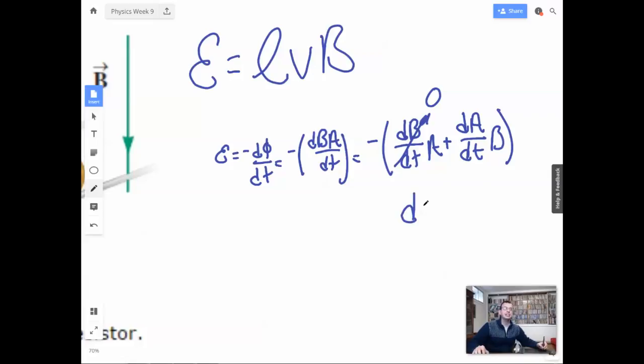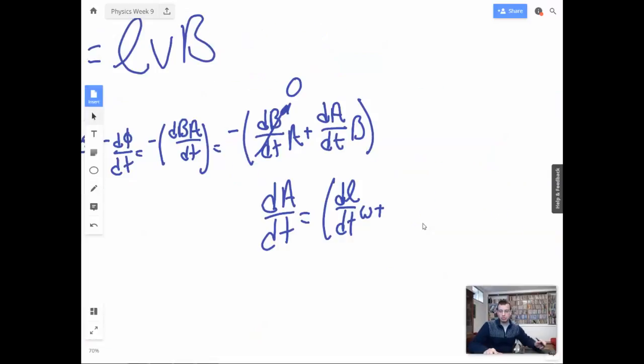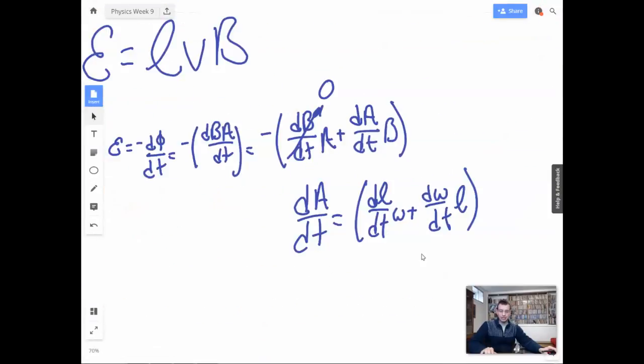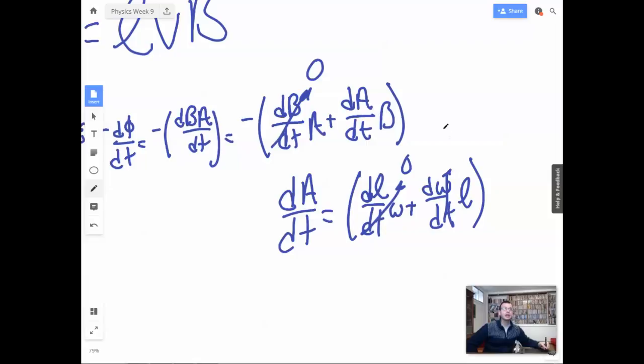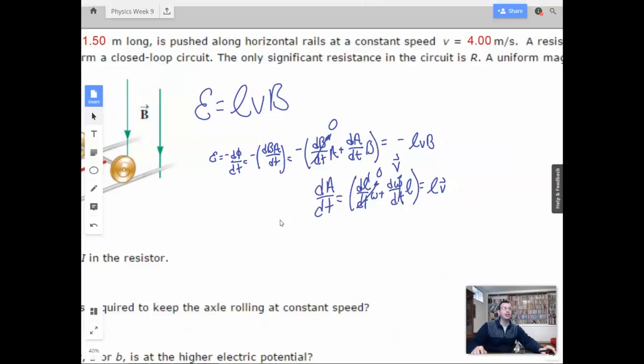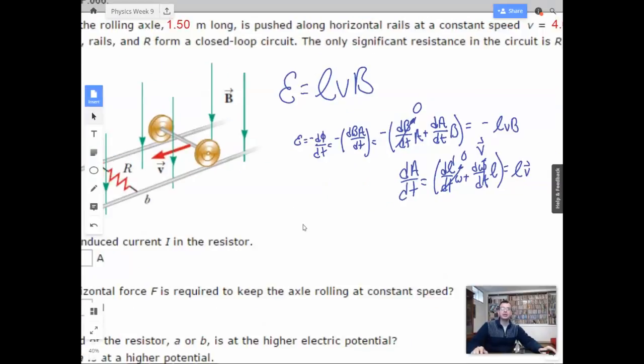Then we look at this and we're going to say that magnetic field is constant, so the change of magnetic field with respect to time is zero. So dA/dt is going to equal, area equals length times width, so this is going to be dL/dt times width plus dW/dt times length, where the length, I'm going to call that the length of the axle, is constant. So this guy is zero, this guy right here is actually just going to be the speed of how fast it's rolling. So we put this all together, we're going to get negative LVB.